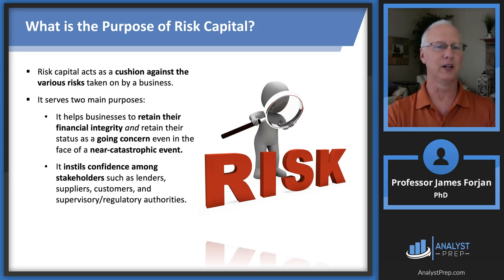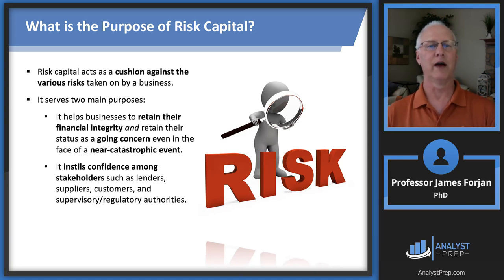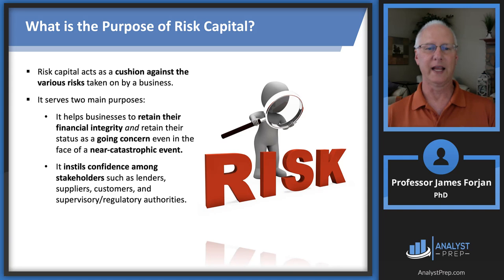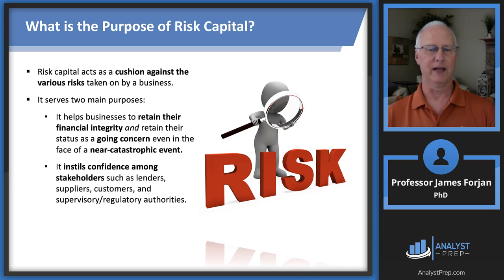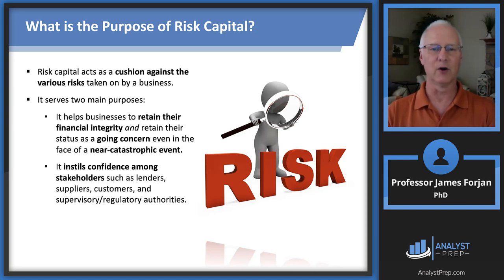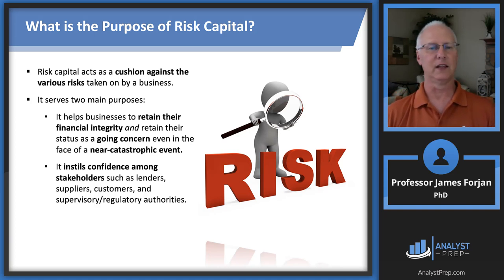There's that word 'cushion' used in the first paragraph or so — cushion against various risks taken on by a business. There are two purposes, and it's probably a good idea to memorize these. First, retain financial integrity. Second, retain the status as a going concern in the event of a near-catastrophic event. Going concern means that businesses and financial institutions make decisions on the assumption that they're going to be around a lot longer — I have a fixed date, but financial institutions make decisions based on the idea that they'll be around forever.